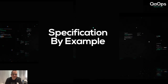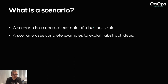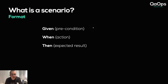So we're going to be talking about specification by example — basically how we can write a better scenario. What is a scenario? A scenario is a concrete example of a business rule. A scenario uses concrete examples to explain abstract ideas. The format of a scenario: you have a 'given' which is a precondition, a 'when' with an action, and a 'then' for what you expect to happen.